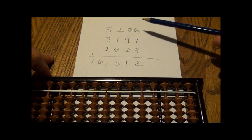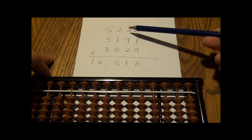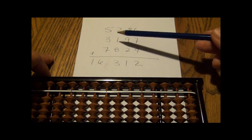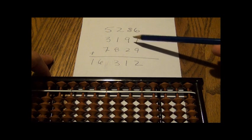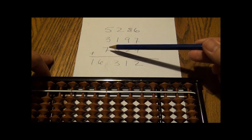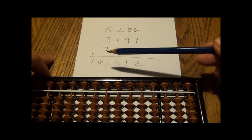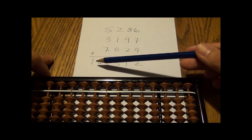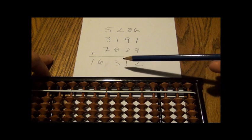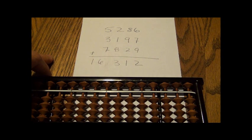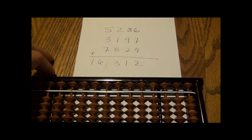I'm going to add these three numbers here: 5,286, 3,197, 7,829. I've already calculated the sum so we can check how we're doing. The sum is 16,312. I'm going to add these using the Soroban.